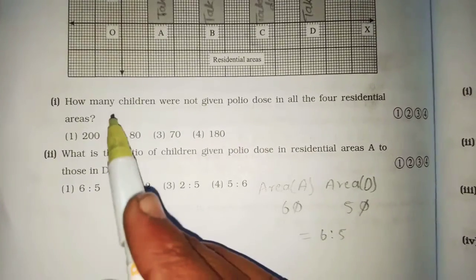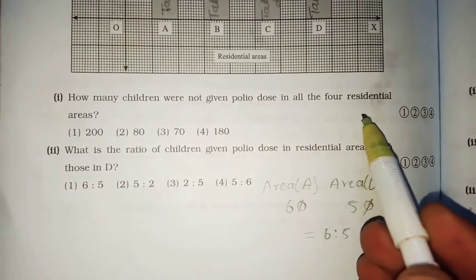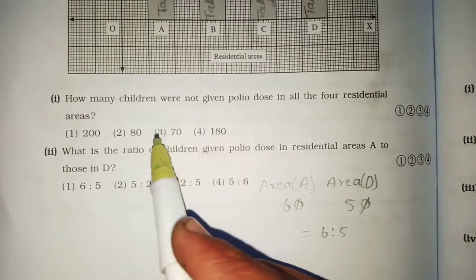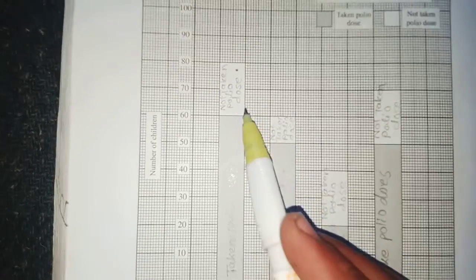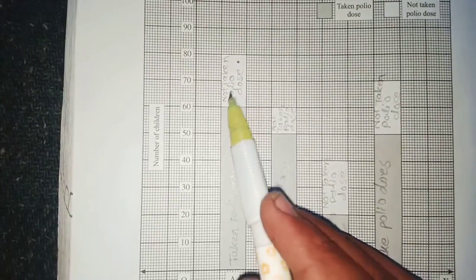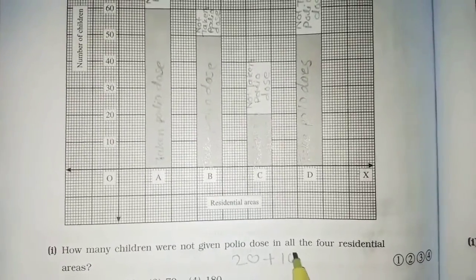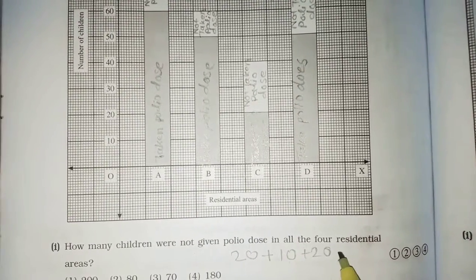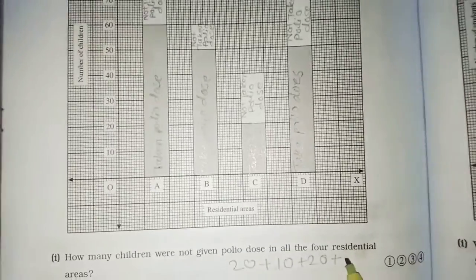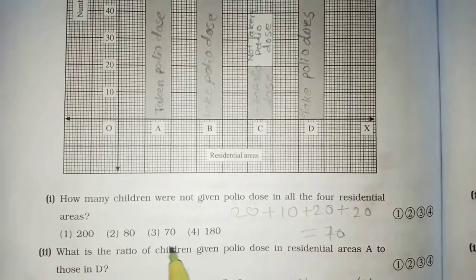Question first. How many children were given polio dose in all the four residential areas? पहला white म्हणजे not take polio dose आहे याची addition करायची. पहला किती आहे? 20. पहला 20. दुसरा 10. तिसरा 20. And last 20. Is equal to 70. Answer is 70.